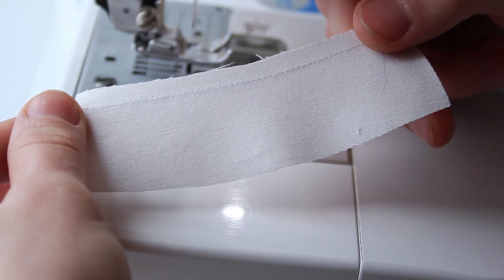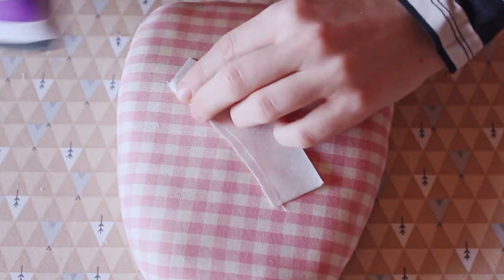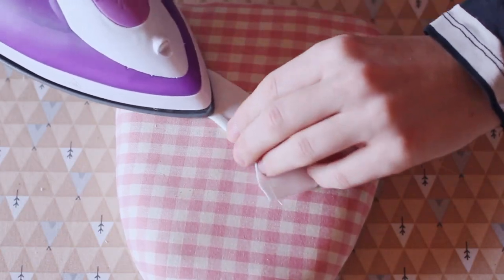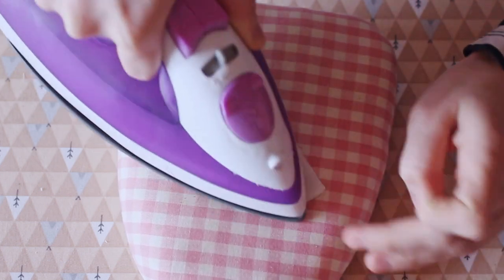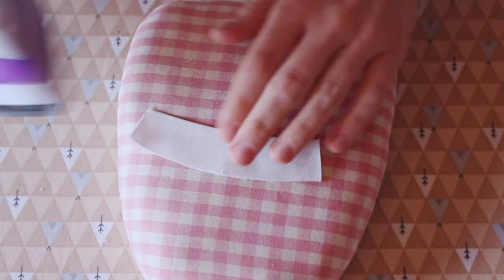Using the basting stitch as a guide, turn the hem allowance towards the wrong side of the fabric and press. The basting stitch should be exactly on the fold.